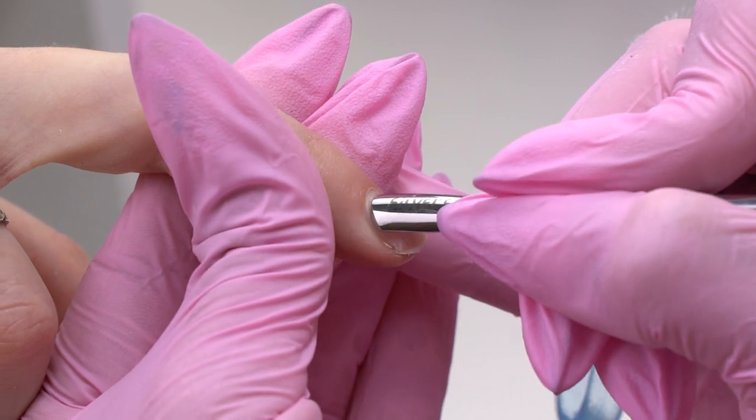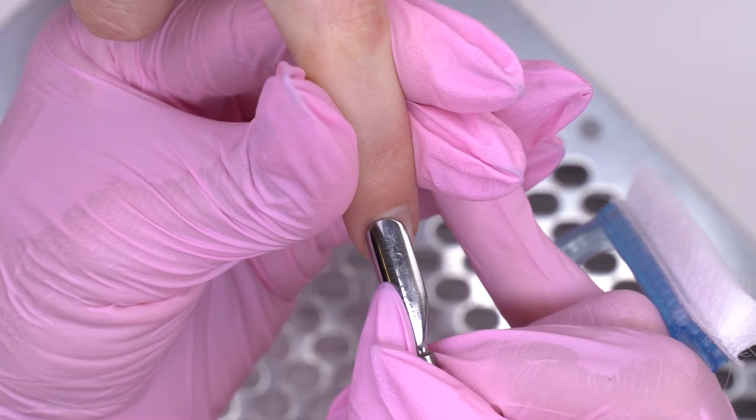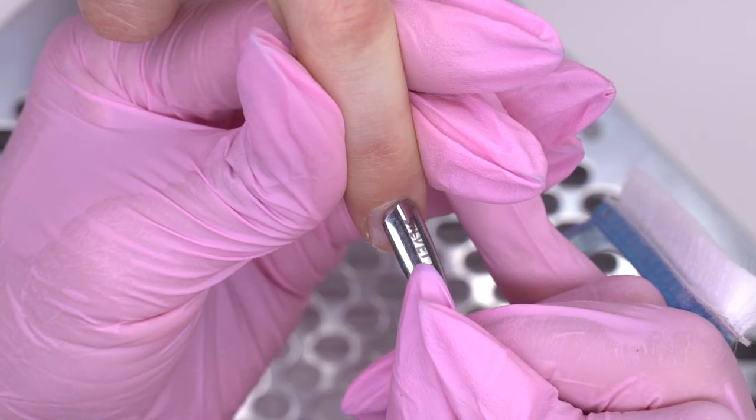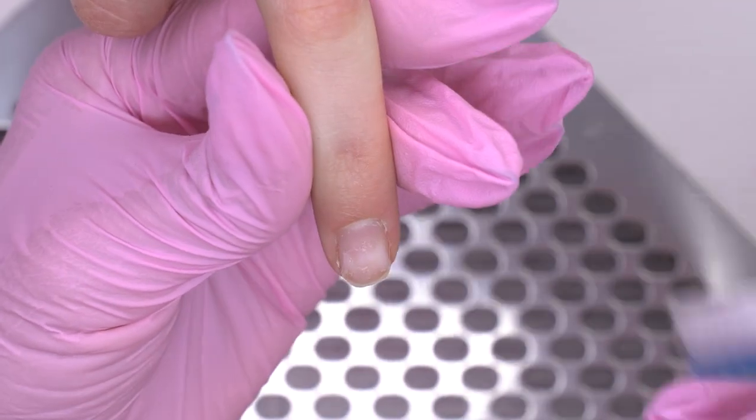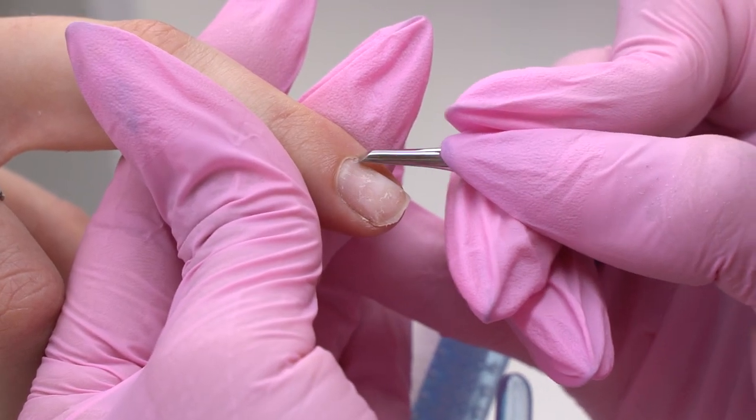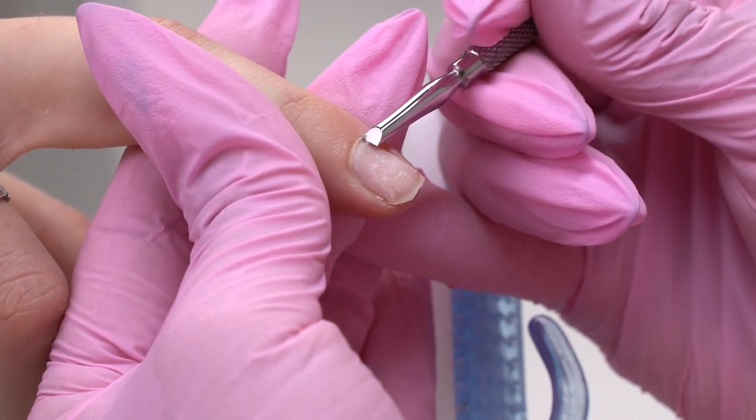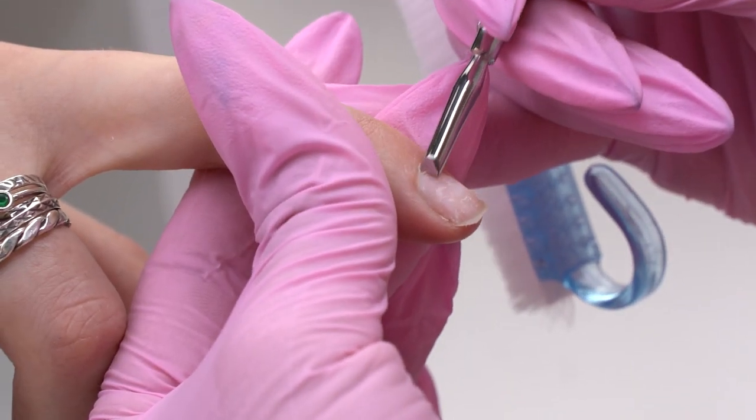I proceed with the manicure. Push the cuticle with a pusher and clean out all the pterygium. This step will save us some time while working with an e-file since most of the pterygium gets removed this way.